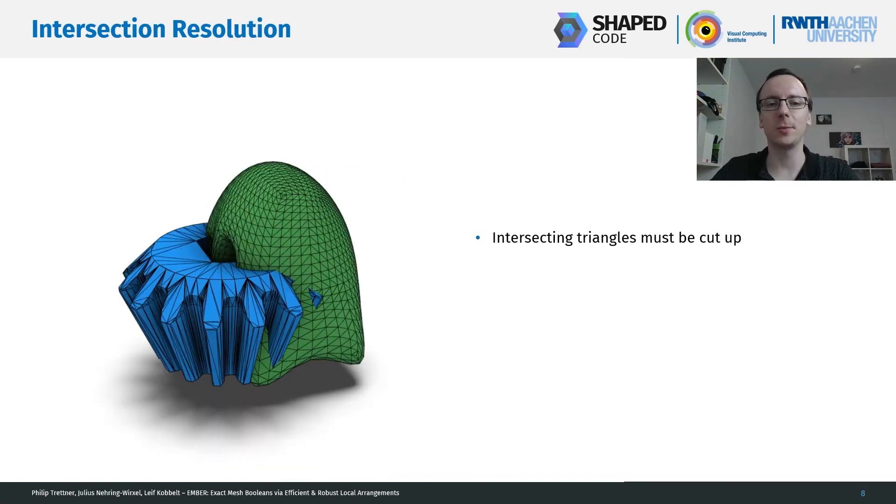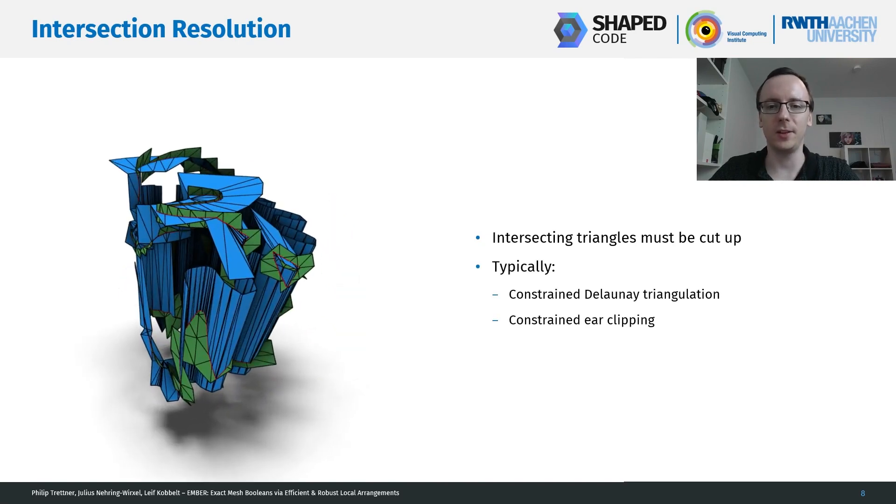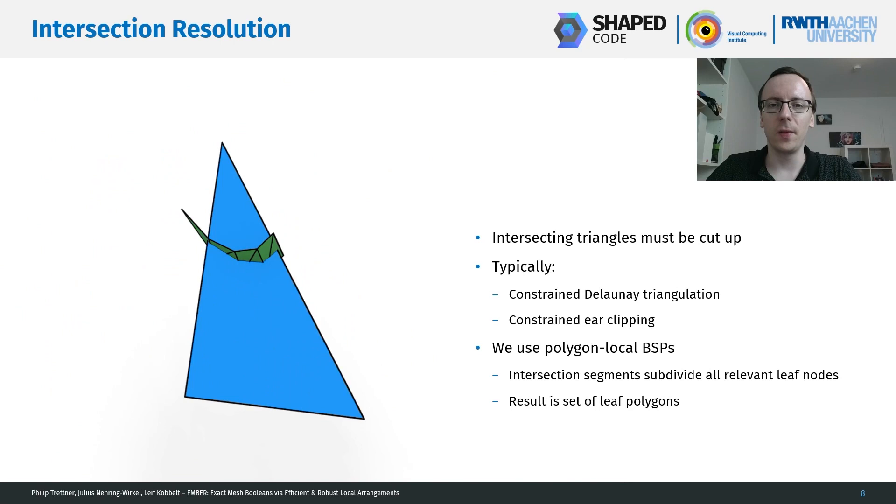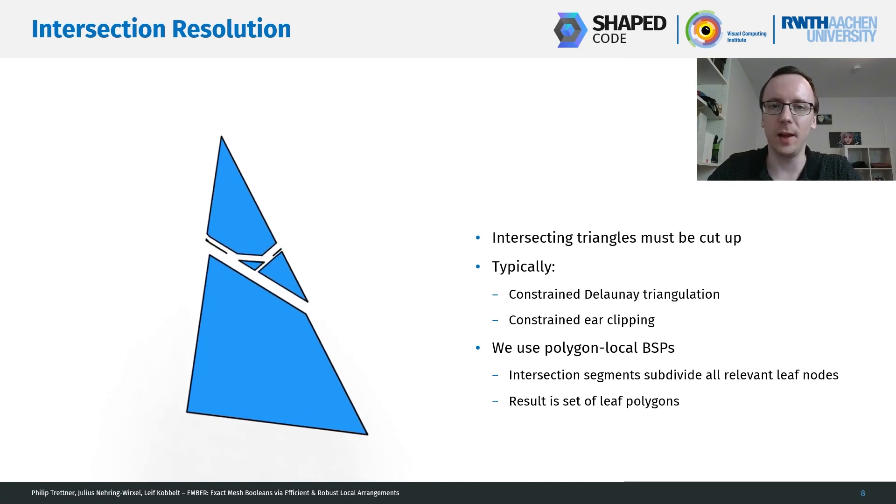Before classification, we need to split up all intersecting triangles. And there are many ways to do this. Typically, some kind of constrained Delaunay triangulation or a constrained ear-clipping algorithm is used. However, as we're operating within a plane-based geometry paradigm, a different approach is more natural. In particular, we construct per polygon a local binary space partitioning tree and insert intersection segments into this tree. In particular, each intersection segment splits each leaf node that is contained within. The result is a set of leaf polygons that do not intersect other polygons anymore and only touch them at their borders.